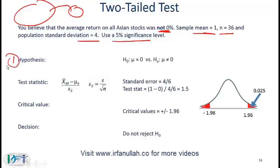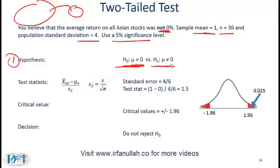What are those four steps? Step one is defining the hypothesis. For a two-tailed test, the null hypothesis must have the equal-to sign, and the null hypothesis is the one you would like to reject. So if your belief is that the return is not equal to 0%, the null is that mu equals 0, and the alternate is that mu is not equal to 0. The alternate is typically what you are after.